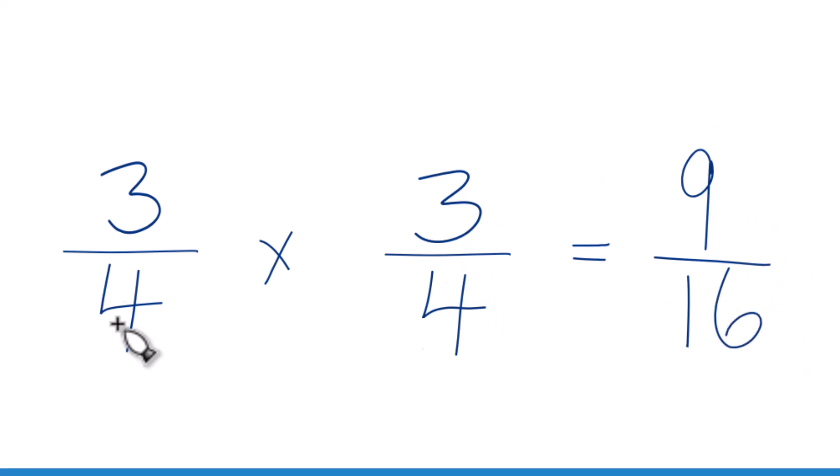So that's it. That's how you figure out 3 fourths of 3 fourths. The answer is 9 sixteenths.